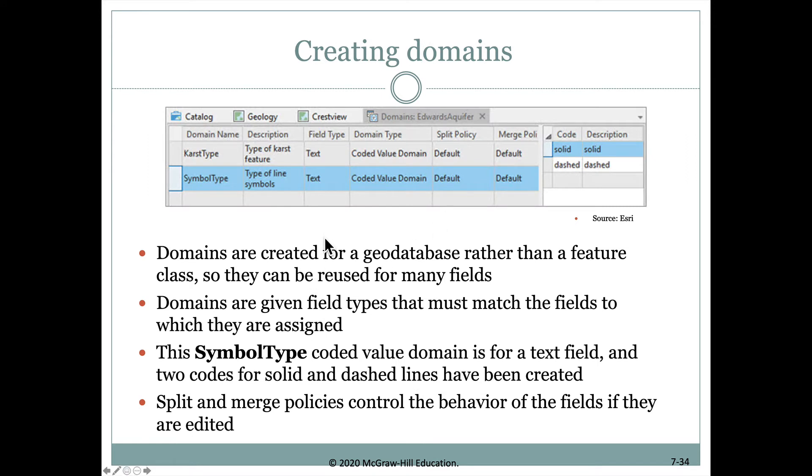In creating these domains, they're created for the geodatabase rather than for one feature class within the geodatabase, so they can be reused for many fields. They're given field types that must match the field type to which they are assigned. In this example, the field type for the symbol type is text, and that's what the field type for the attribute table would also have to be. These can also be split and merged as needed for future use.